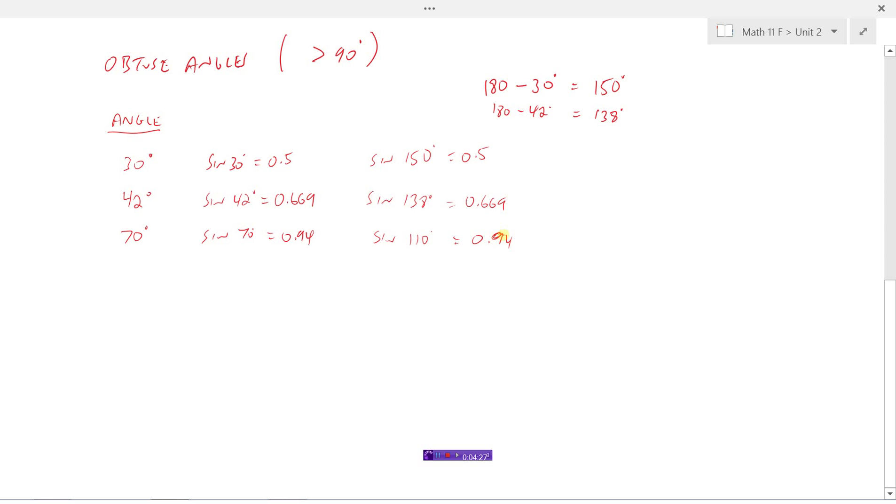We're not going to go into the proof for why this is true. But you should know that the sine of any angle is exactly the same ratio as 180 degrees minus that angle. This would be true for any angle. Any angle here, like 30 or 42 or 70, will give you the exact same ratio as if we put in 150, 138, and 110, which we got by going 180 minus our original angle. So that's one of the identities for the sine of an angle.